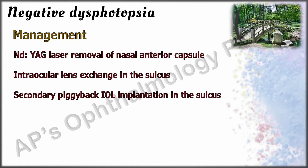The main drawbacks of piggyback IOL implantation are an increased risk of pupillary block, glaucoma, and lens decentration of either the original or the secondary lens, resulting in refractive error. Reverse optic capture — that is, placing the optic alone anterior to the anterior capsule while leaving the haptics in the back — can even be used as a primary measure to prevent negative dysphotopsia from developing in the contralateral eye.